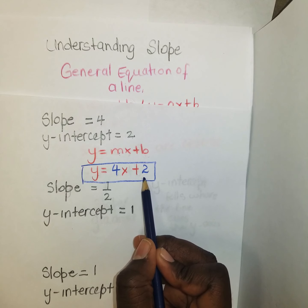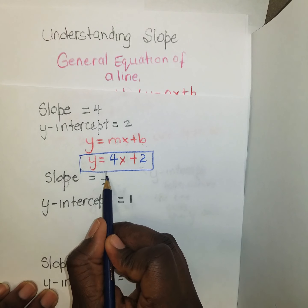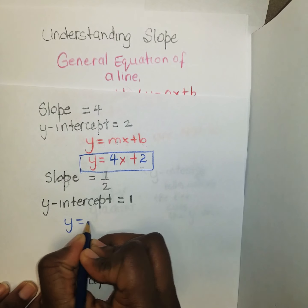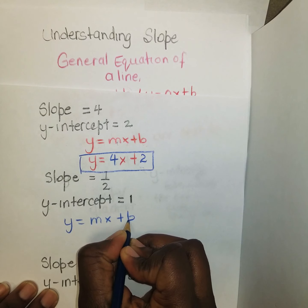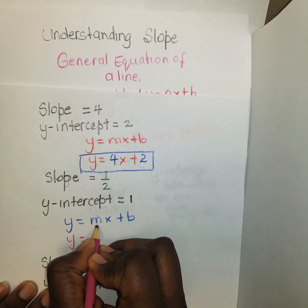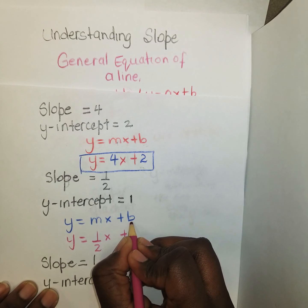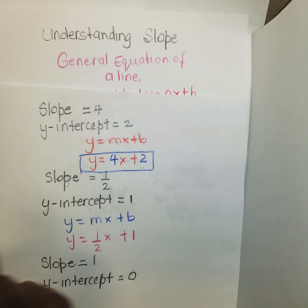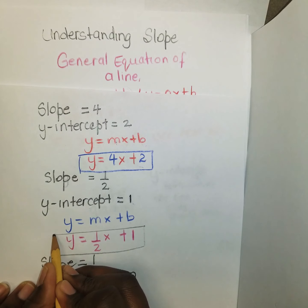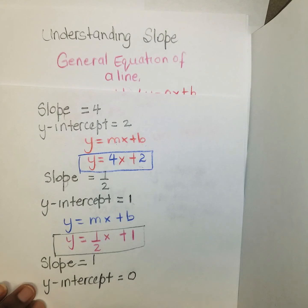Let's try this one: the slope is equal to one-half and the y-intercept is equal to 1. General form again: y = mx + b. So y = (1/2)x + 1. And remember, the slope tells the steepness of the line.